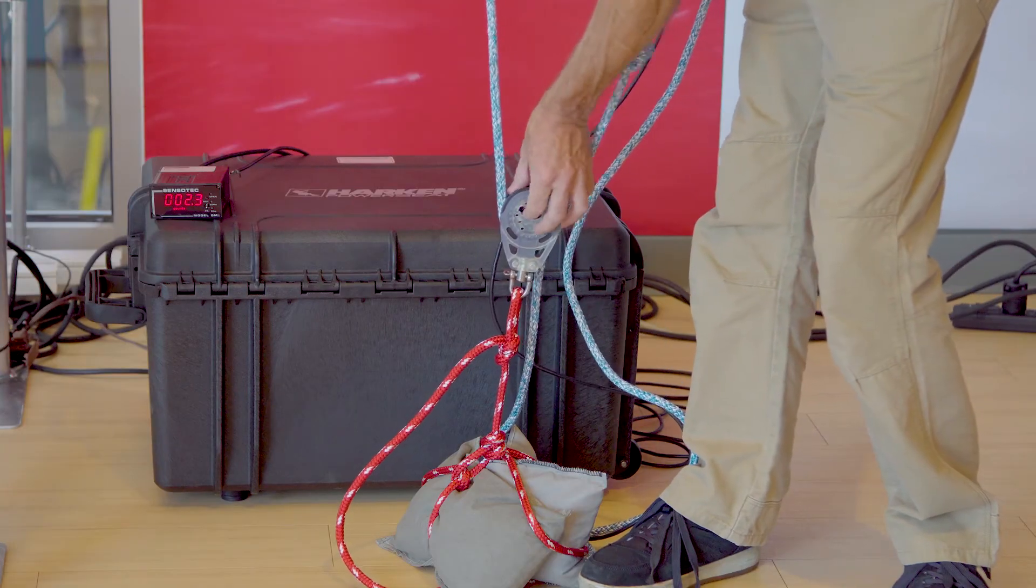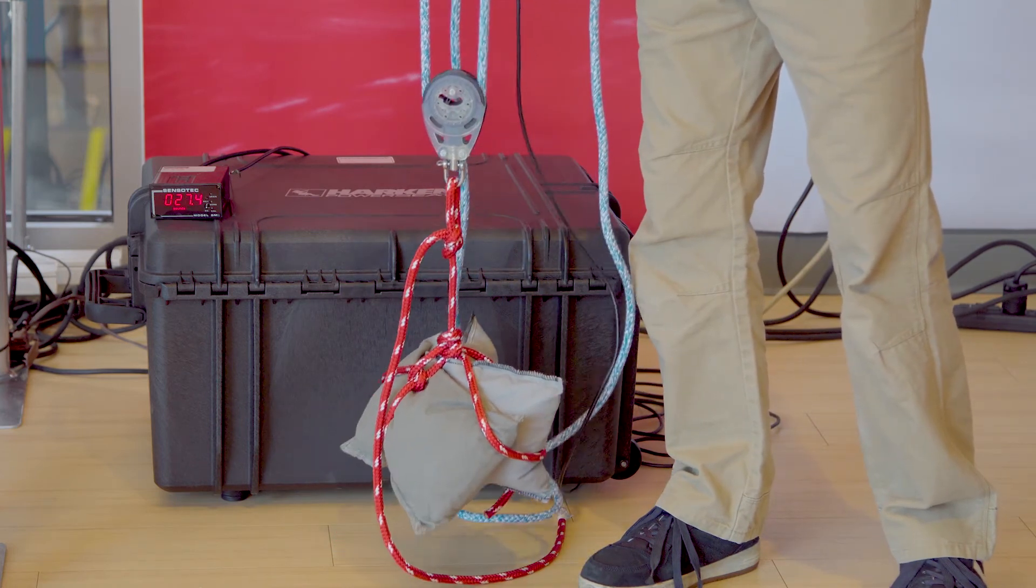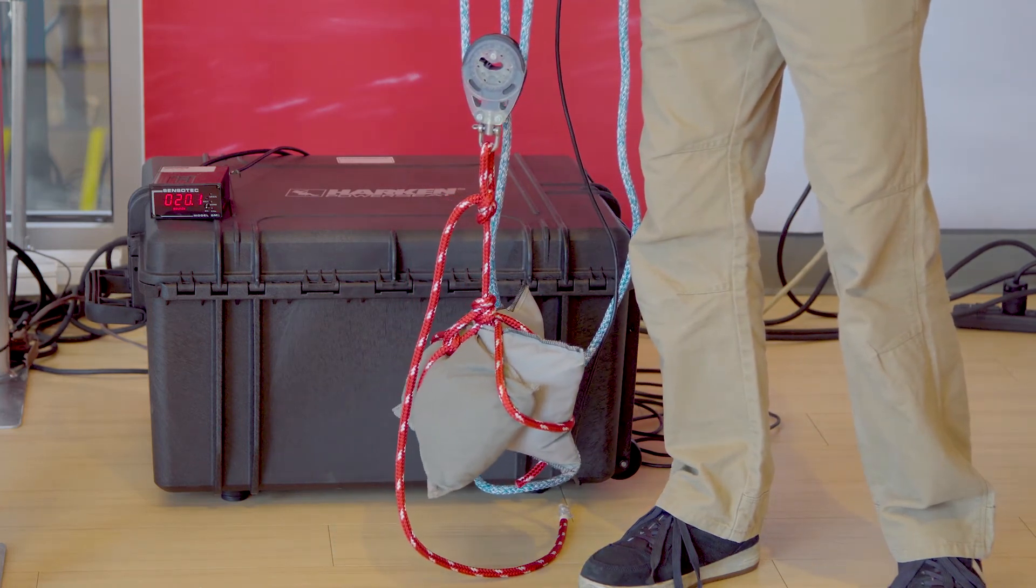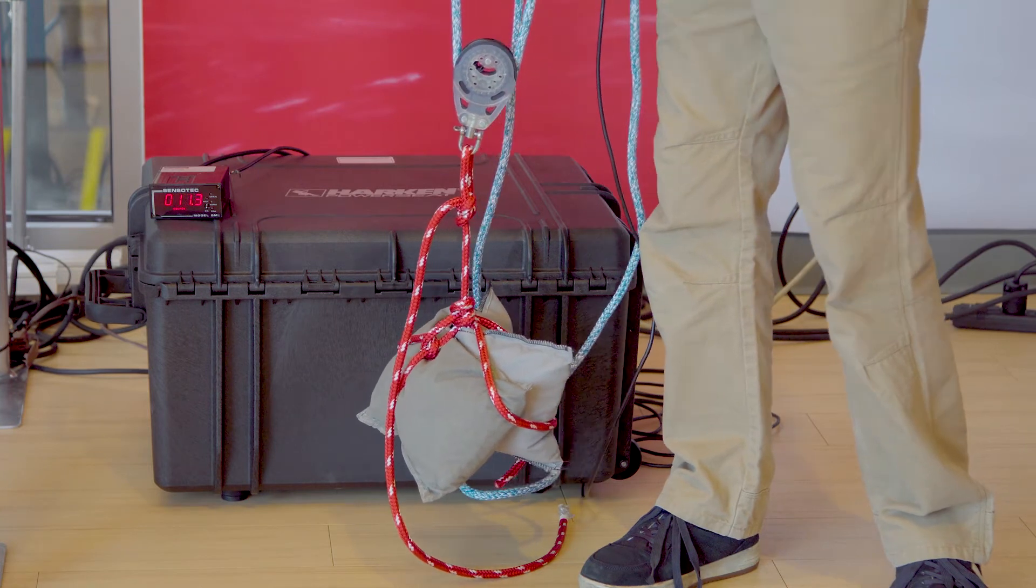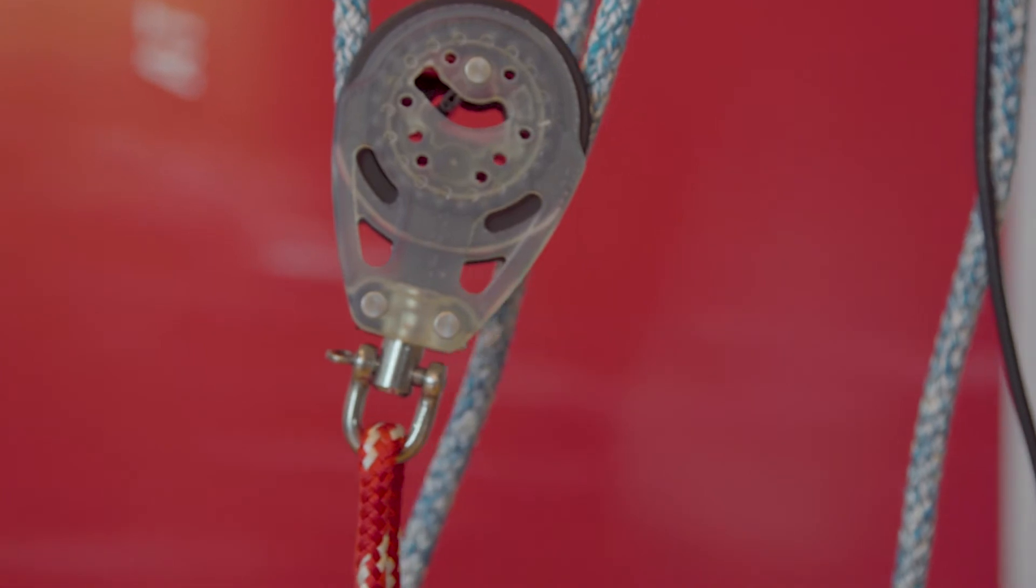When I turn the ratchet on, my trim mode is free just like before but ease mode the shiv is actually stopped which forces the line to travel around a stopped shiv.